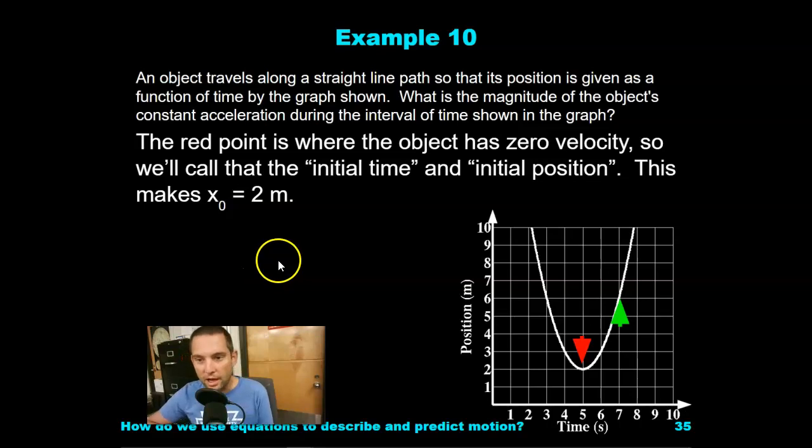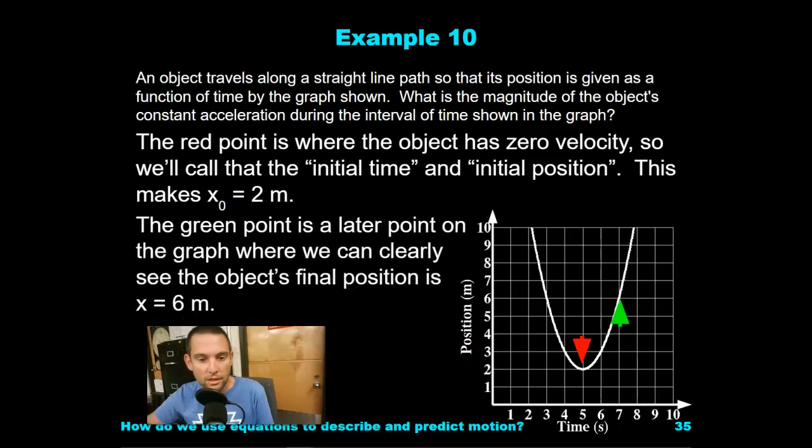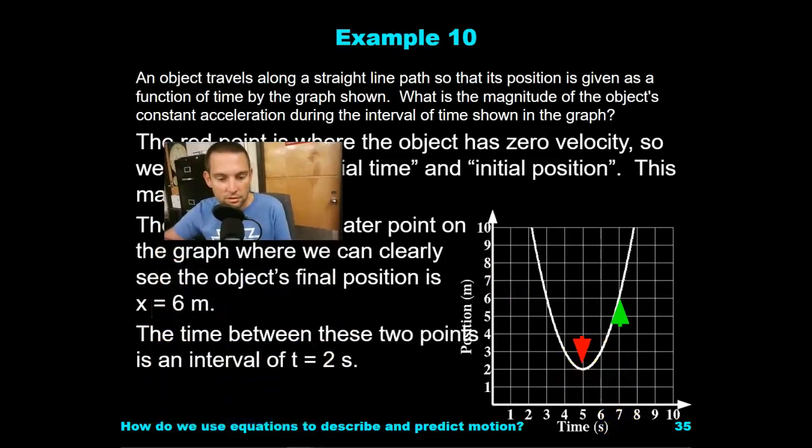The red point is where the object has zero velocity, because the slope is zero at this point. So we'll call this the initial time and the initial position. This makes our initial position 2 meters. The green point is later on the graph where we can clearly see the object's final position is 6 meters. It intersects this point right here. It's 6 meters and it's at 7 seconds, so we know our time interval is 2 seconds.